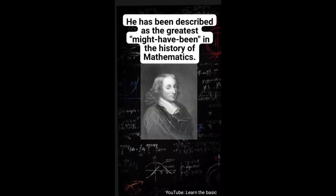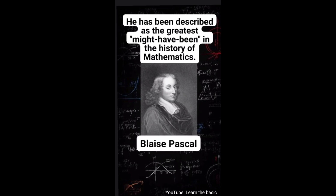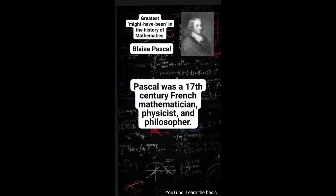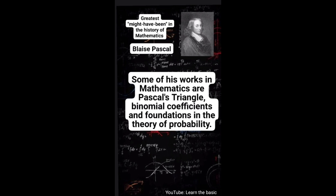He has been described as the greatest might-have-been in the history of mathematics. Do you know him? He is Blaise Pascal. Pascal was a 17th century French mathematician, physicist, and philosopher. He is known for the invention of the calculator, syringe, and hydraulic press. Some of his works in mathematics are Pascal's triangle, binomial coefficients, and foundations in the theory of probability.